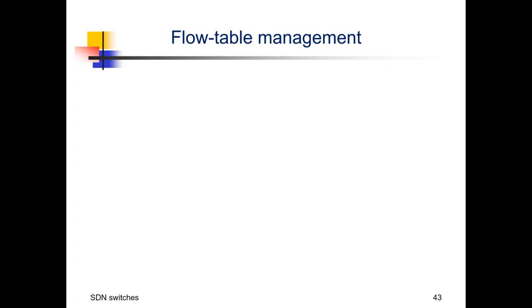Messages sent from the controller to the switch are used to modify flow tables and enter new entries. Once a new entry is written in the flow table under control of the controller, a flow is instantiated. All packets belonging to that flow that match the specific set of header values are then treated as specified in the action. At a certain point, the controller may also ask the switch to delete the flow if it wants to cancel that specific flow.